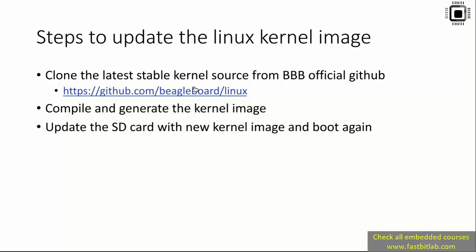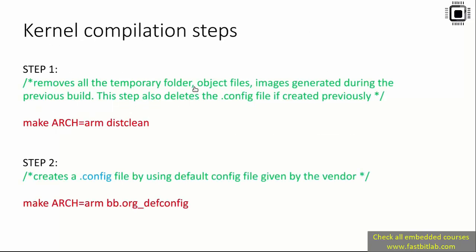Welcome back. I hope you have downloaded the Linux source code from the BeagleBone GitHub repository. Now let's configure and generate the Linux kernel image by compiling the source code. We have to follow the kernel compilation steps. Step one is to run make distclean — this removes all temporary folders, object files, and images generated during a previous build. It also deletes the .config file if created previously. Since we are doing a fresh build, this step is not critical.